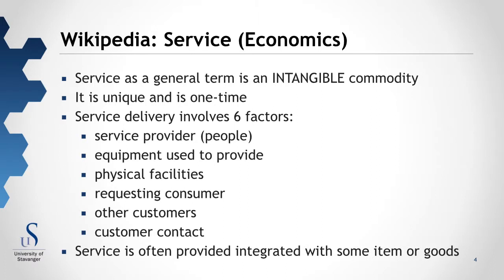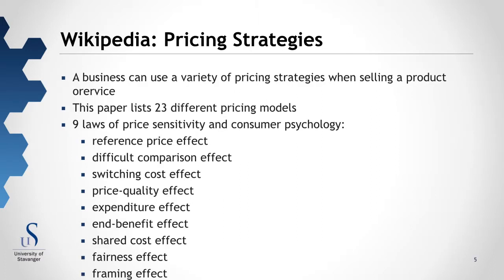We have the Wikipedia article about pricing strategies. Pricing strategies tells us that a business can use a variety of pricing strategies when selling a product or a service. This paper lists 23 different pricing models. We want to find out what real options are available when we want to set a price for different items and services. There are nine laws of price sensitivity in consumer psychology to fit these 23 different pricing models.